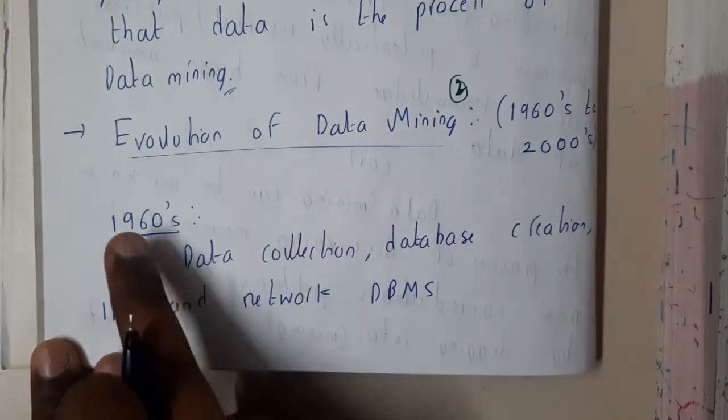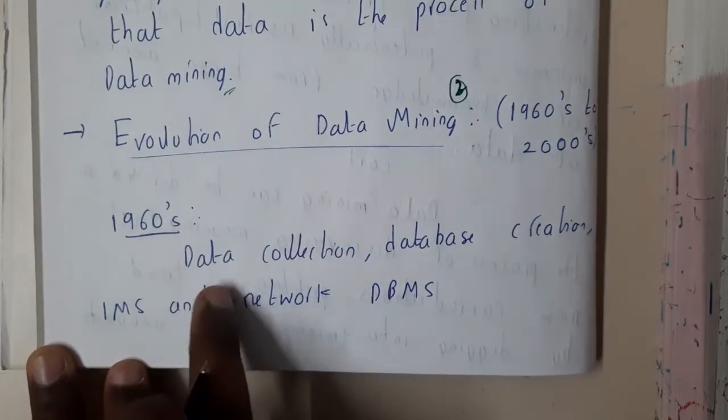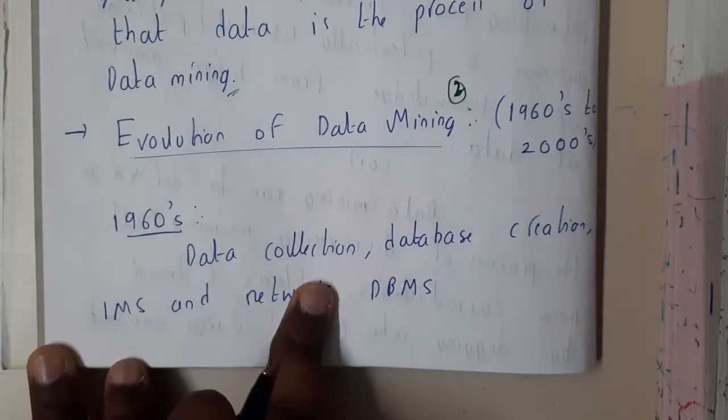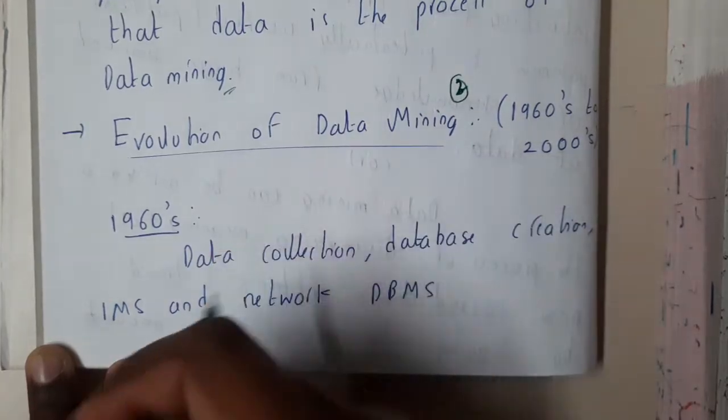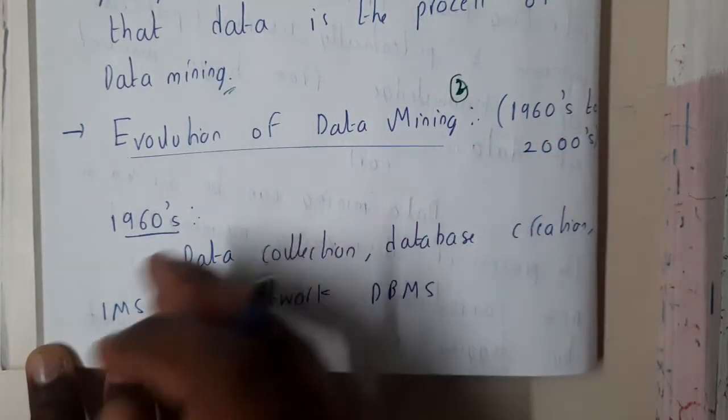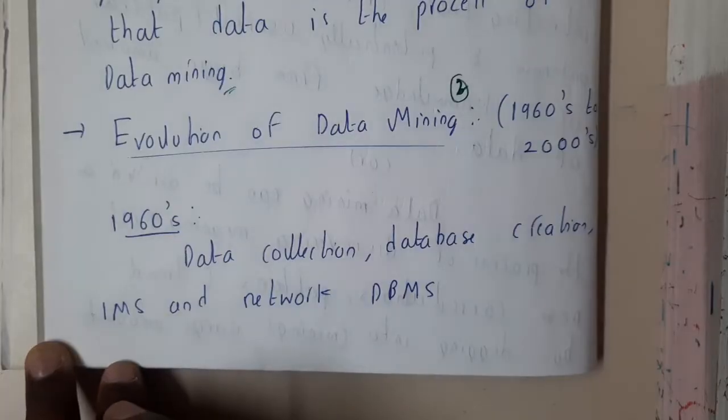So in initial 1960s, they used to do the database management system. They used to store the data in database management systems, how we are doing nowadays in websites. So basically, whenever you are storing in terms of websites, the data and backend everything will be stored in terms of databases.